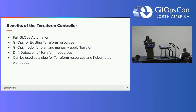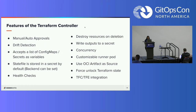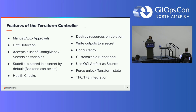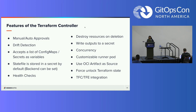It's used as a glue for Terraform resources and Kubernetes workloads as well. These are some features of the Terraform controller — and the docs will probably change within days because there are so many things being added daily. You can set it up to do manual or auto approvals. Drift detection is a really awesome feature — you can have it do that whether you want it to be doing applies or not. It also accepts a list of config maps and secrets as variables. The state file is stored in a secret by default, but you can override that with whatever backend you're using right now.